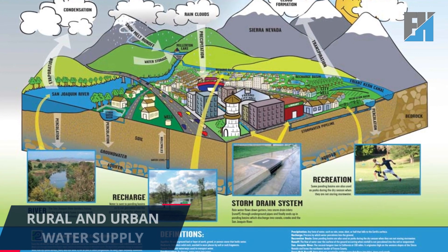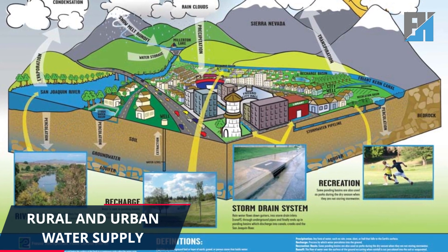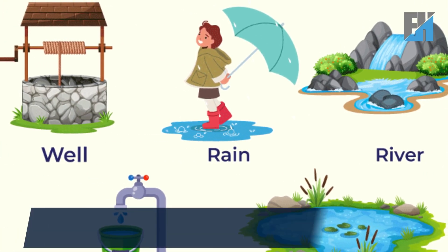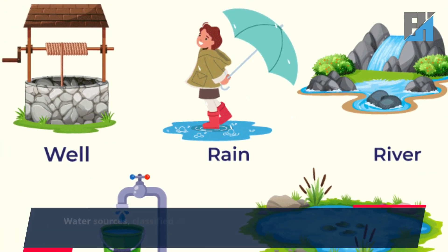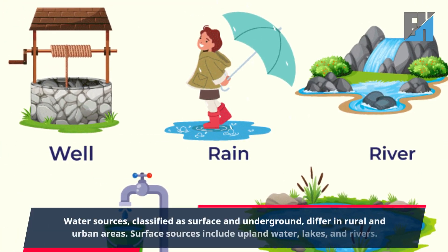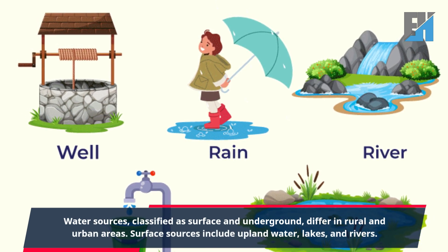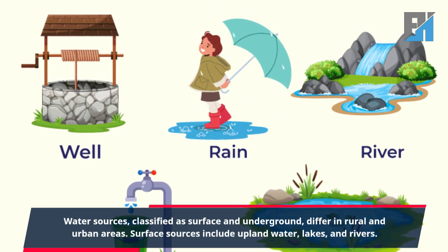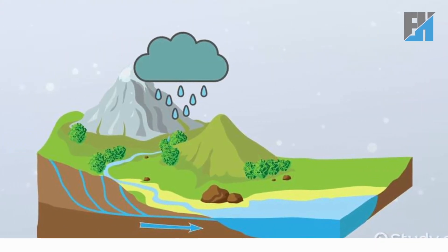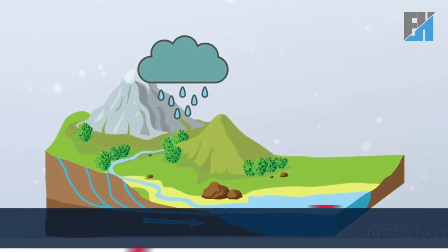In today's class we will discuss the topic of rural and urban water supply. Water sources are classified as surface and underground, and these differ in rural and urban areas. Surface sources include upland water, lakes, and rivers — surface water originating from rainfall.